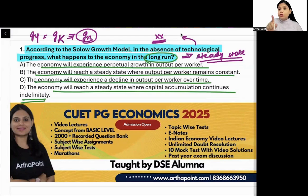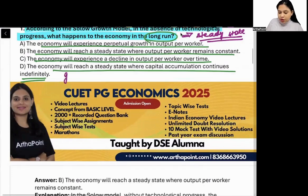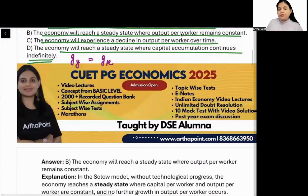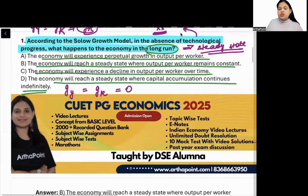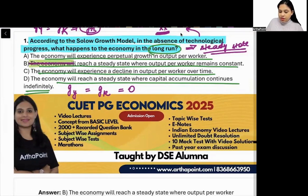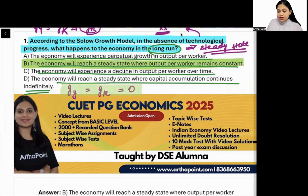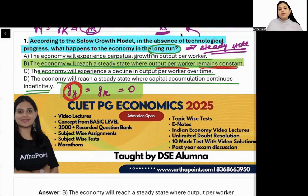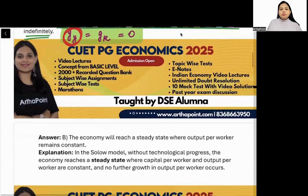The growth rate of output per capita is not the same as the growth rate of aggregate output or aggregate capital. Now, looking at the growth rate of output per capita — the economy will reach a steady state where output per worker remains constant, meaning output per worker will not grow. Its growth rate will be zero, and output per worker will become constant. So the answer will be B.